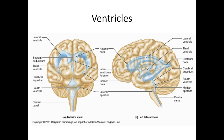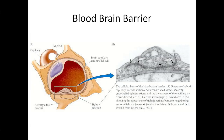This cerebrospinal fluid is constantly circulating here as the circulatory system of the brain. Remember, the brain doesn't have blood in it — there's that blood-brain barrier. The blood-brain barrier has astrocyte feet lining all of the blood vessels, so nothing is getting directly into the brain.